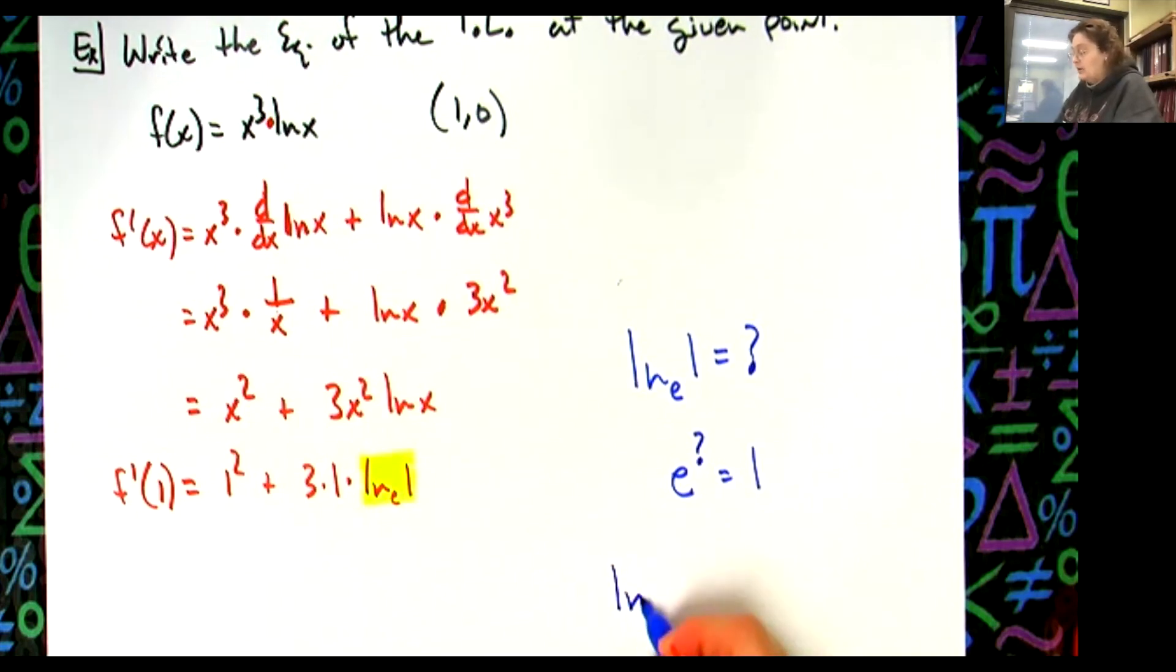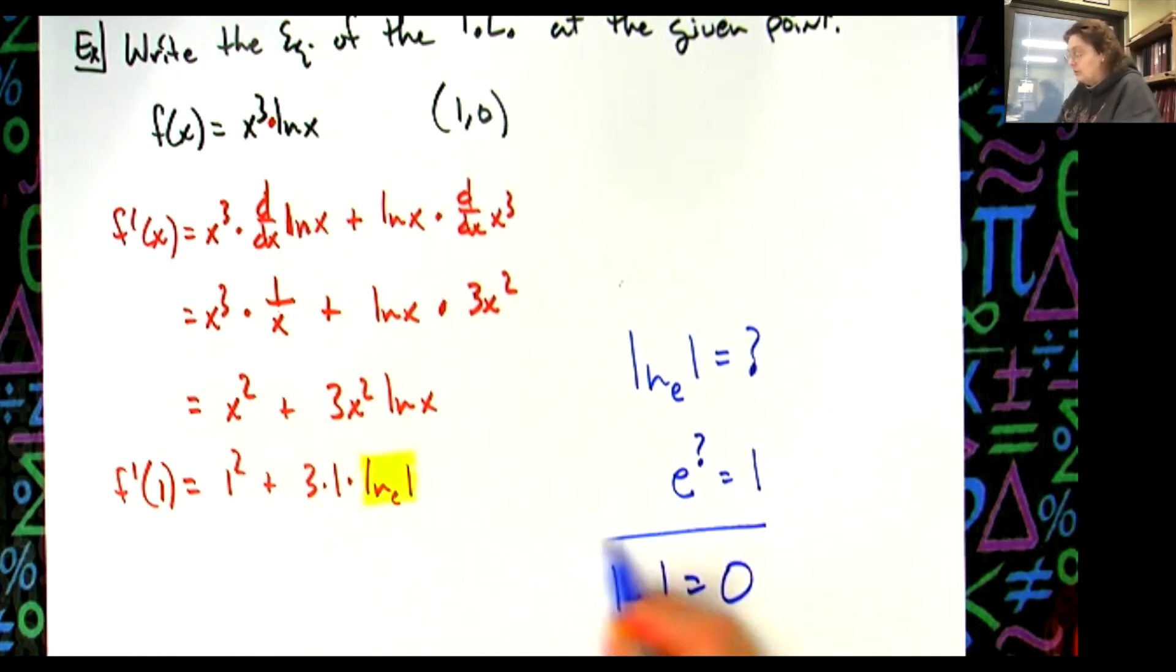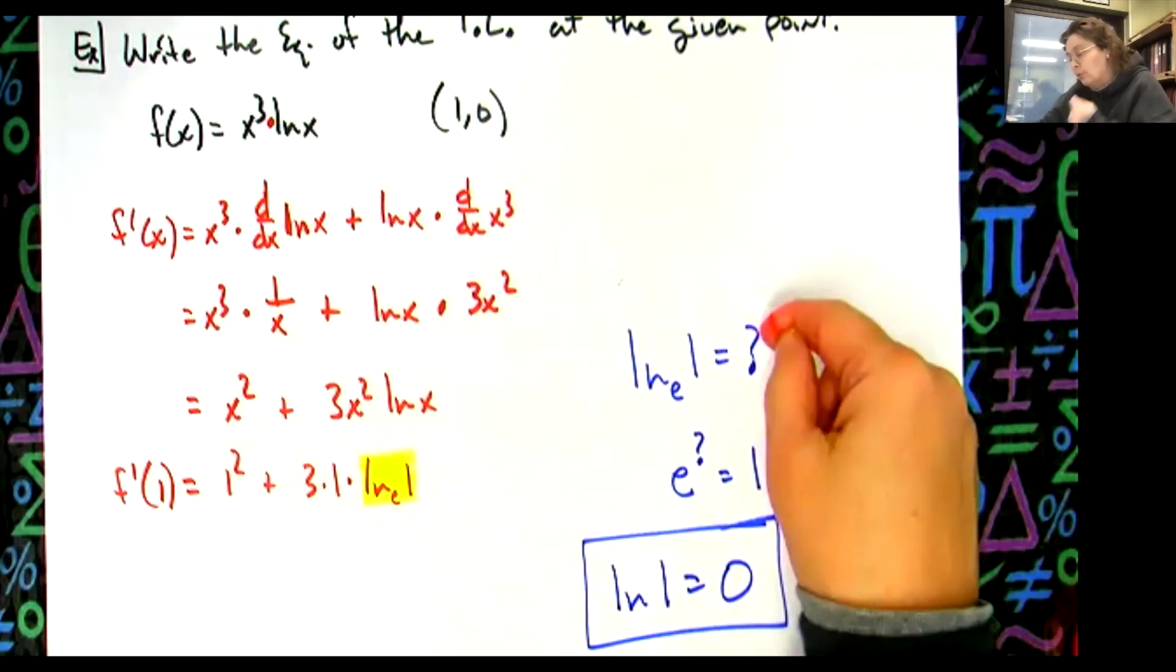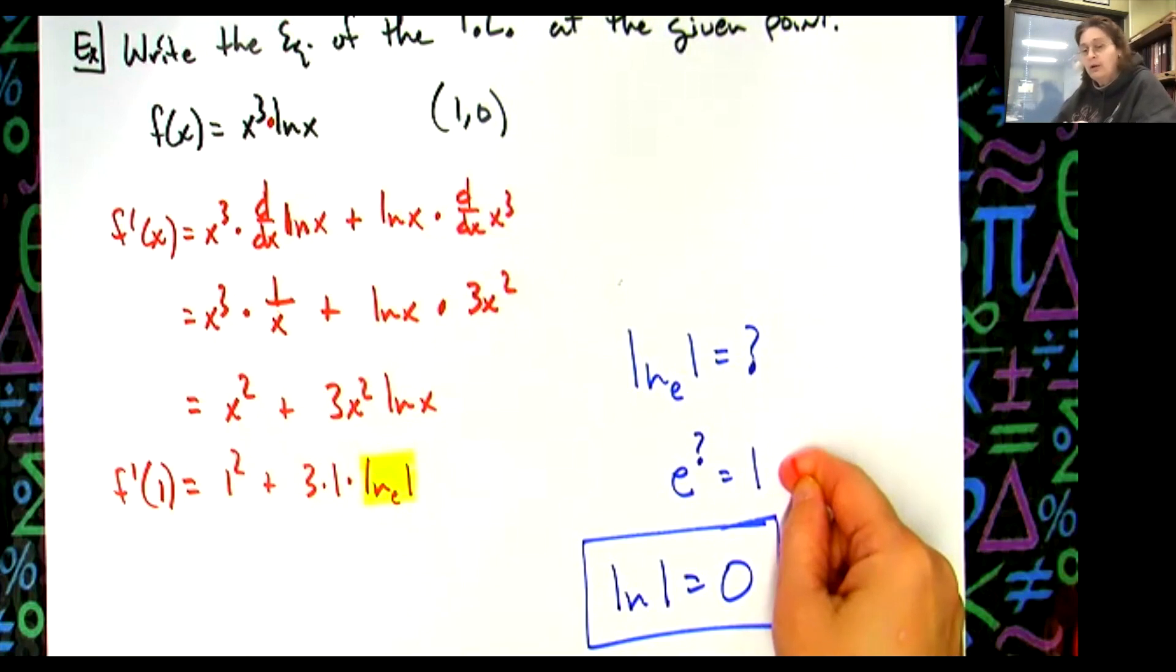Yeah, so in other words, the natural log of 1 equals 0. Yes, excellent, excellent, Josiah. That made me go into all that, and you know, you can just memorize natural log of 1 equals 0, but why? Why does it equal that? It's because when I go from logarithmic form to exponential form, that exponent has to be a 0 right there, so yes, excellent, very good.